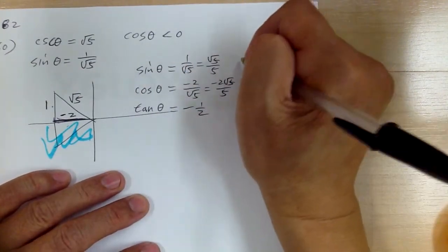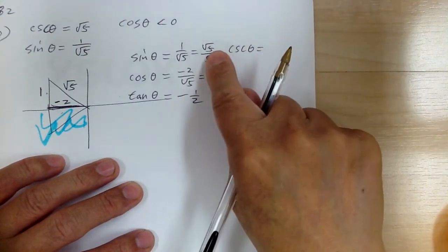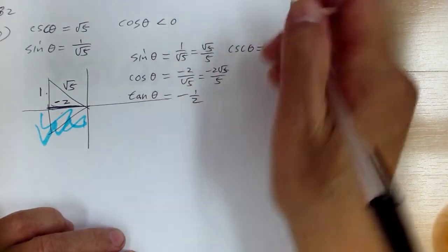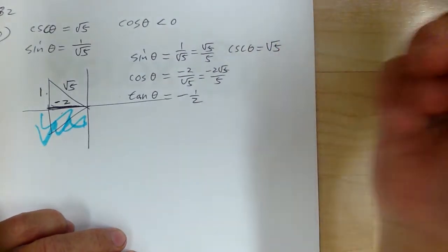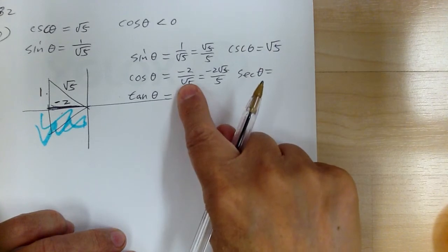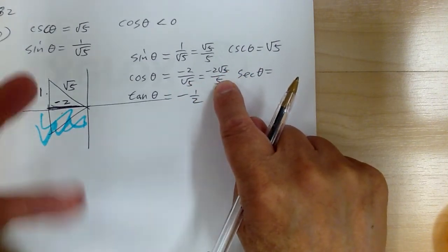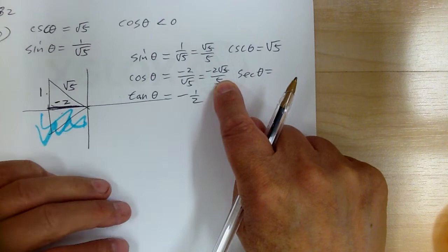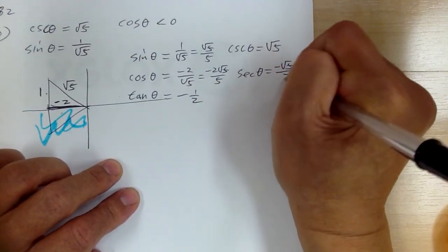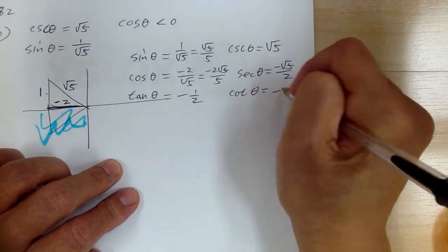For the secondary functions: cosecant theta — flip the rationalized form over and you get √5, and you're done. For secant theta, flip the unsimplified form over to get negative √5 over 2. For cotangent, flip tangent over and you get negative 2. That's it for number 60.